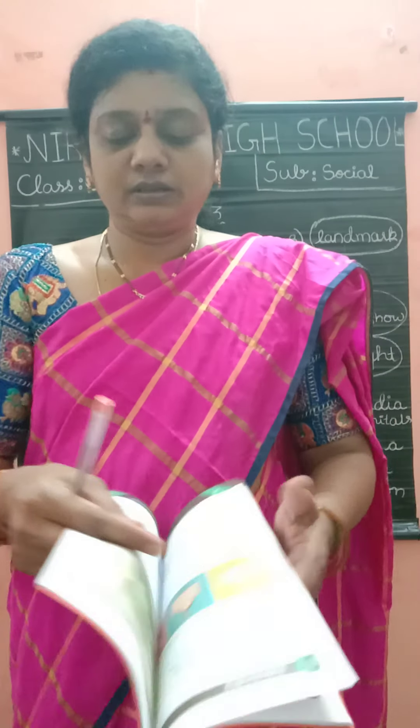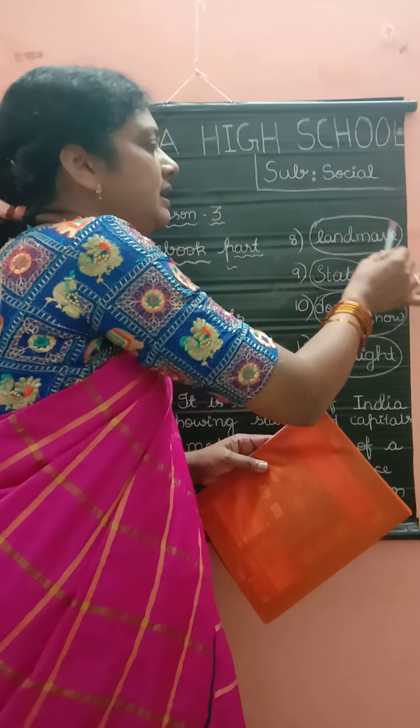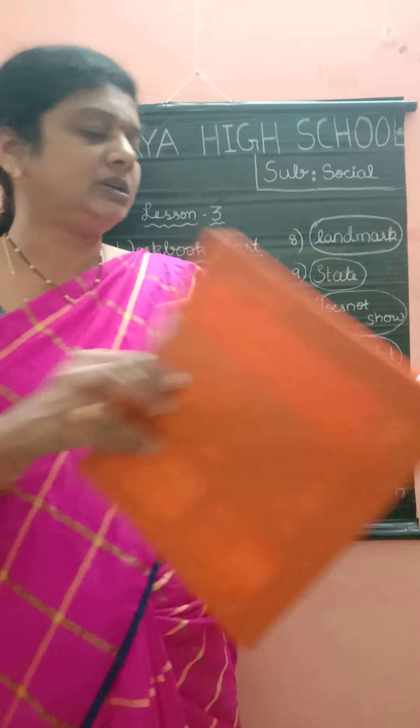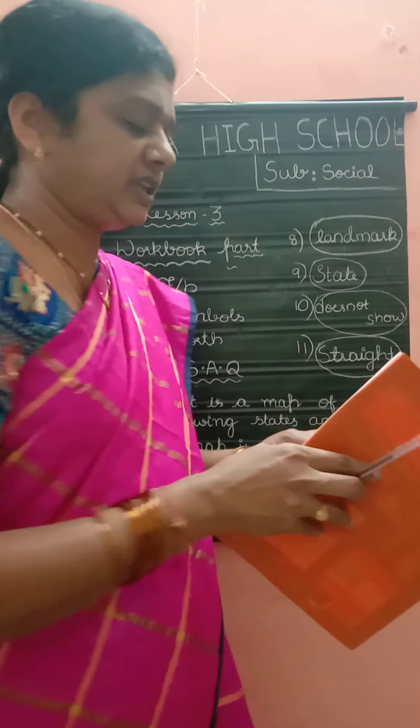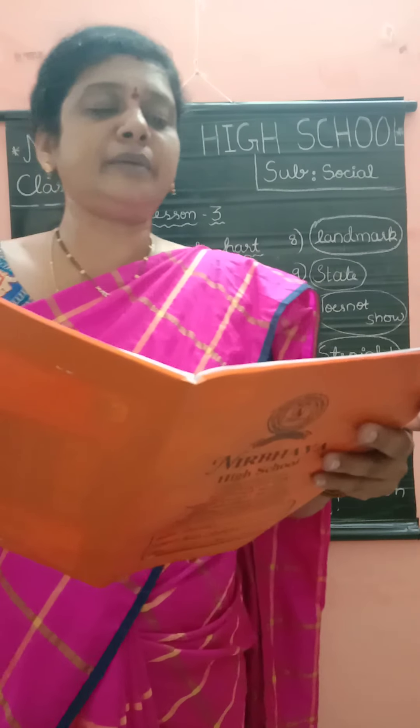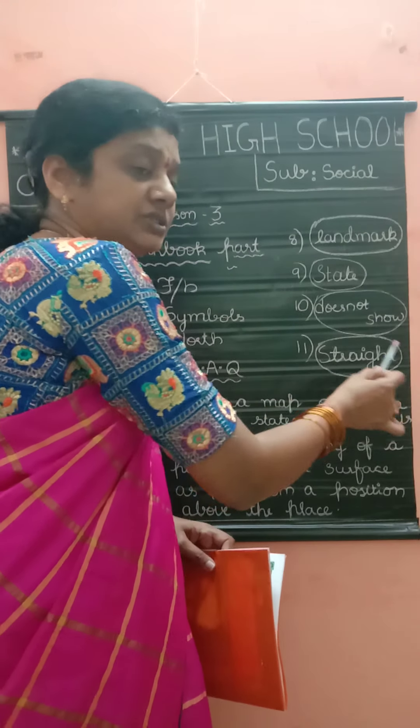The next, page number 14 — circle the correct word. Dash is a building that can be easily seen from a distance. Which one is correct, children? It is landmark — circle the landmark. I will be able to see my dash on a map of India — circle the state. A map of India dash my neighborhood — does not show. Circle that. And the eleventh one: dash lines on a map divide it into equal parts — answer: straight. Circle the straight.